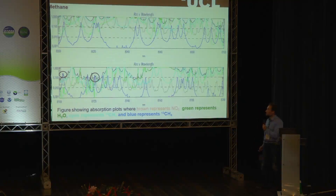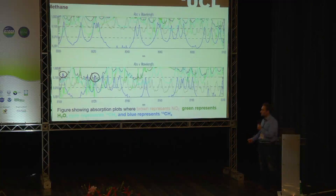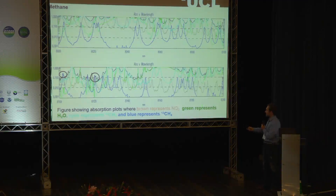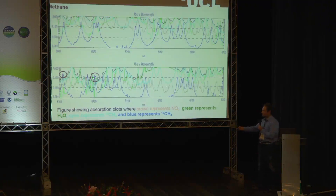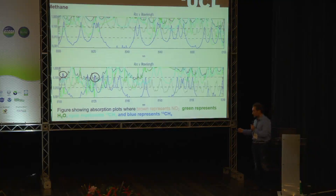Now I'm going to show some data taken from the HITRAN database. Here we're looking at the spectral range of about 8 to 8.2 micrometers, which is in the thermal range. We can see a number of key absorbing gases in this region: primarily NO2, green being water vapor, cyan being carbon-12, and blue being carbon-13. Carbon-13 is largely obscured in this range by all these atmospheric gases, apart from a few points which are the strongest absorbers in the region — which means we should hopefully be able to pick these out with a fine-resolution Fourier Transform Spectrometer.